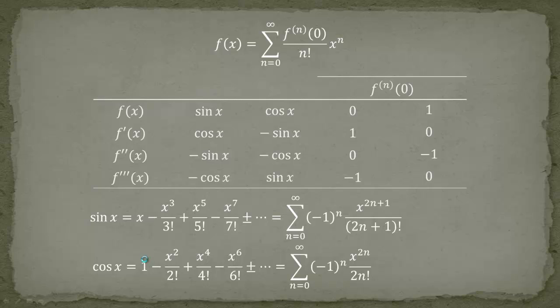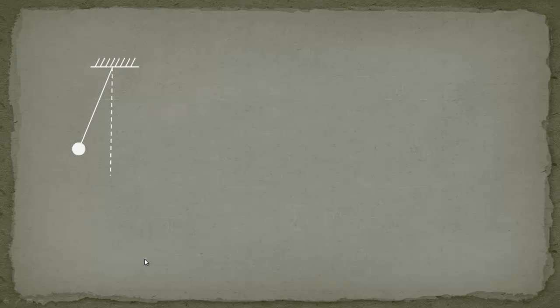Now let's look at our application — the pendulum. Imagine a rooftop with a rope hanging from it, and at the end of the rope there is a ball, which we assume to be infinitely small with mass m. On that ball there is a gravitational force equal to m times g. The rope has length l, and the angle between the rope and the perpendicular line we call theta.